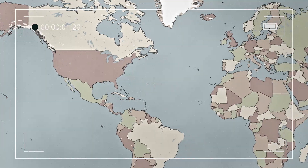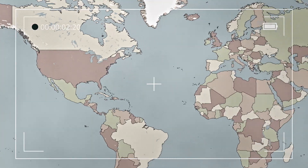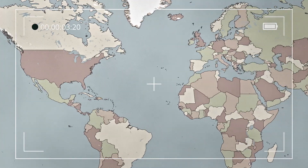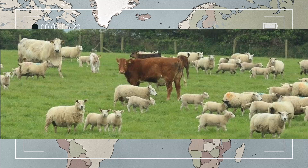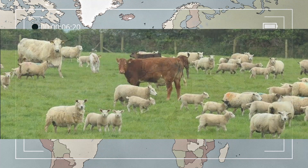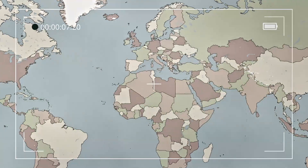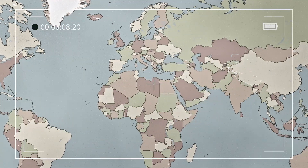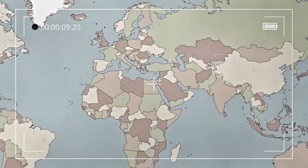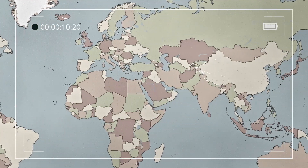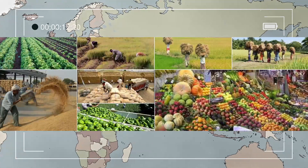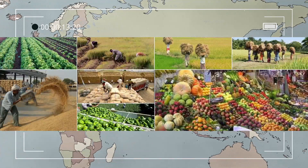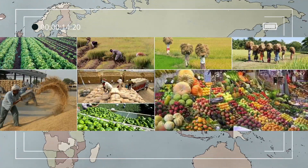Liver flukes are found worldwide, especially in regions where sheep and cattle are raised. Over the years, liver fluke infections have been increasing, partly due to changing agricultural practices and global trade.